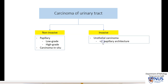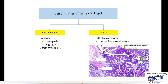Invasive urothelial carcinoma may also sometimes have a papillary architecture. Here is an example of a urothelial carcinoma which does have a papillary architecture — you can see these finger-like fronds covered by epithelium. But at the same time, this tumour happens to be invading into the wall as well. This is an example of a bladder carcinoma.